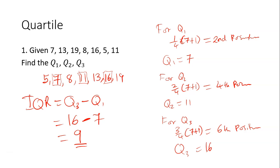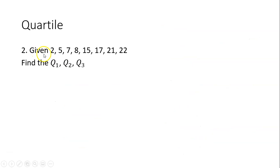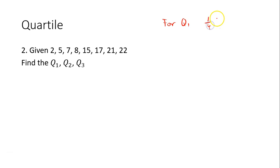Question 2: Given 2, 5, 7, 8, 15, 17, 21, 23 — find Q1, Q2, and Q3. The data is already arranged, so no rearranging needed. For Q1: 1/4 × (n+1). Our n is 8, so 1/4 × (8+1) = 1/4 × 9 = 2.25 — that's the 2.25 position.